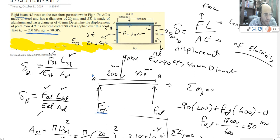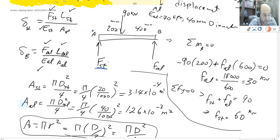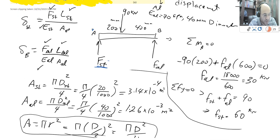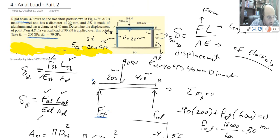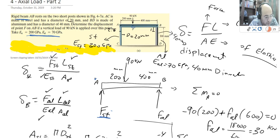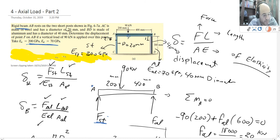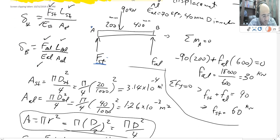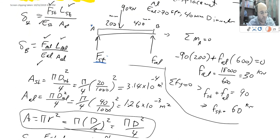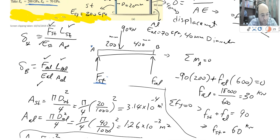Each of them has a diameter — steel is 20 millimeters, but aluminum is 40, so they don't have the same diameter; I have to keep this in mind. I find the area for each of them: area equals pi D squared divided by 4. I calculate the area for each, then from there I calculate the elongation for each of them.